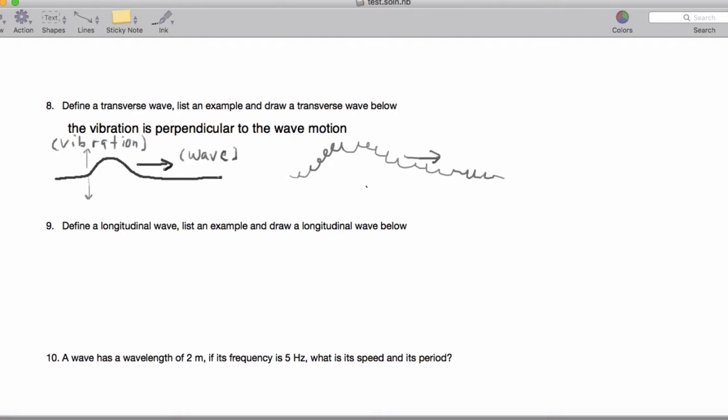Now, the next thing is longitudinal waves, and we'll draw that below. The way a longitudinal wave works is the vibration is parallel or in the same direction as the wave motion. I'll draw it with a compressed spring. We've got a spring that's compressed like this, and then there's a little pulse bunched up here.